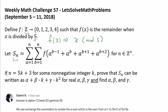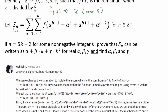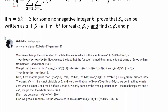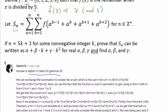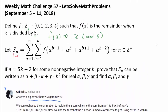So what do we want to find? If n equals 5k+3 for some non-negative integer k, prove that S sub n can be written as α + βk + γk² for real α, β, γ, and find α, β, and γ. Before we go on, I want to recognize Gabriel N, who was the very first person to correctly answer this challenge with the answer 12, 33, and 20.